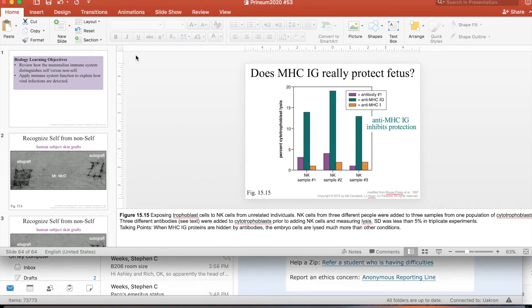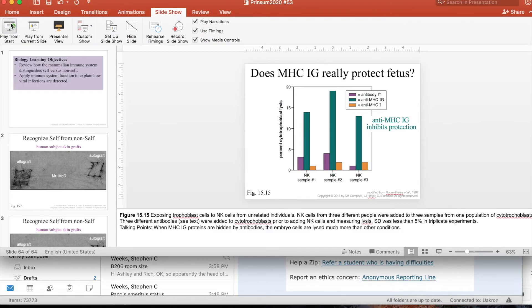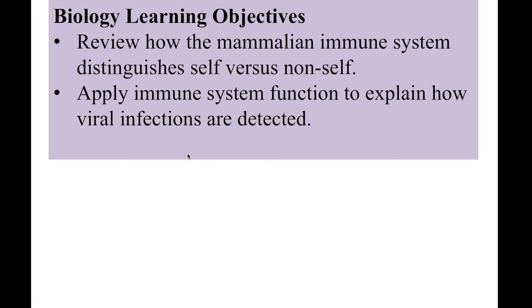This is podcast number 53. All this week we're talking about emergent properties and how complex issues of the biology of humans can be explained by its parts, but not any one of its parts. So the parts have to come together to get this emergent property. In this case, we're talking about how it is that a human fetus is not rejected by the mother.